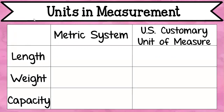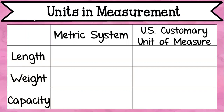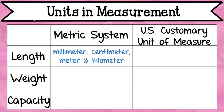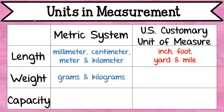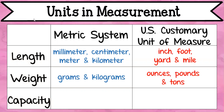Let's look through here — I know that you're going to find a lot of things that are familiar. For the metric system, for length, you have millimeter, centimeter, meter, and kilometer. For customary measurement, you have inch, foot, yard, and mile. They're both talking about length. For weight, a couple of examples in the metric system are grams and kilograms. In customary measurement, you have ounces, pounds, and tons.